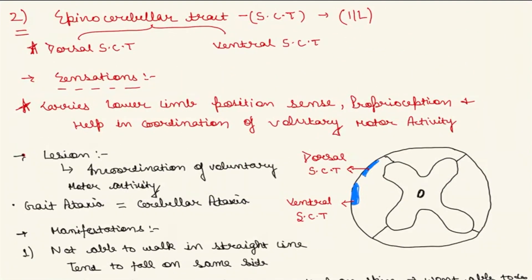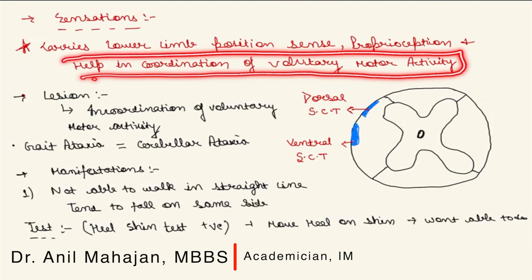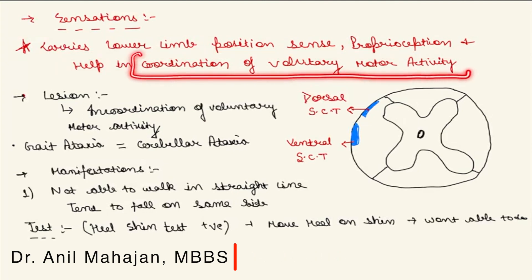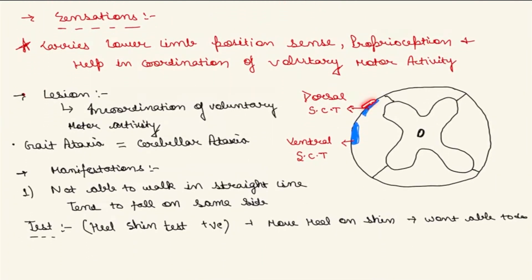The second tract in the spinal cord is the spinocerebellar tract. The spinocerebellar tract always carries ipsilateral fibers. It is divided into the dorsal and ventral spinocerebellar tracts, with the dorsal being responsible for major manifestations. Its function is to carry lower limb position sense and proprioception, and mainly help in coordination of voluntary motor activity. Since cerebellar lesions are always ipsilateral, a lesion to this tract causes incoordination of voluntary motor activity — known as gait ataxia or cerebellar ataxia.